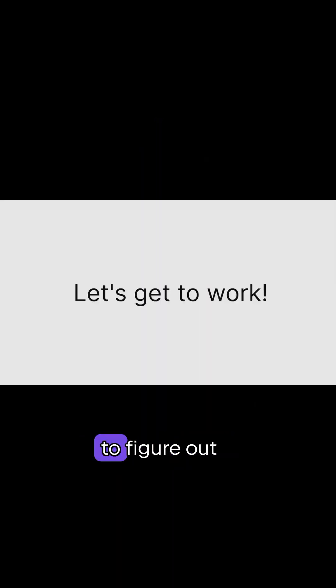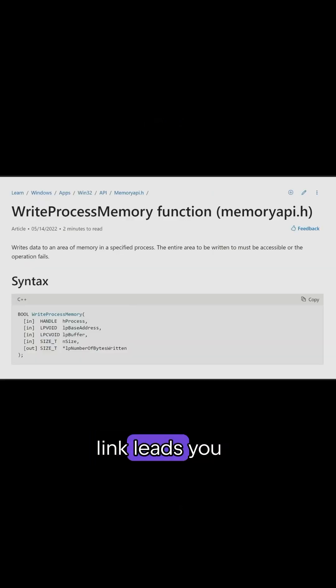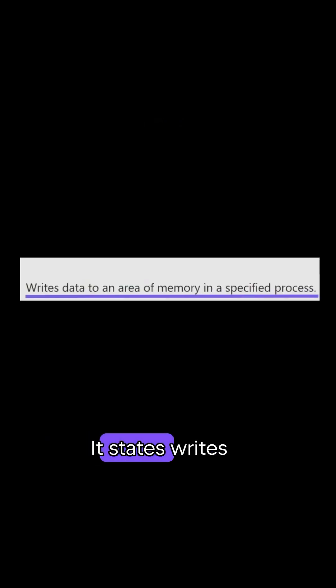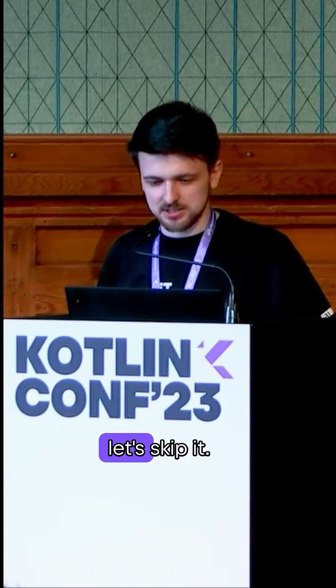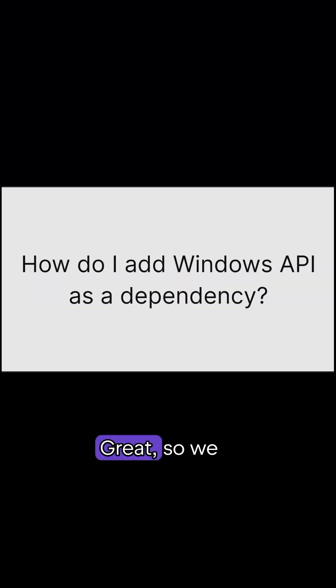We know what to do, we now need to figure out how to do it. Google. The very first link leads you to this Microsoft API reference. There's a function called WriteProcessMemory. It states: writes data to an area of memory in a specified process. Exactly what we need. We've read enough documentation for today, let's skip it. We only have to read the header. So the function is called WriteProcessMemory. It comes from the Win32 API.